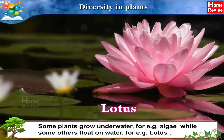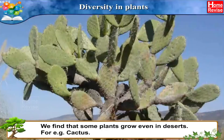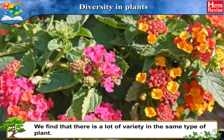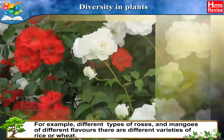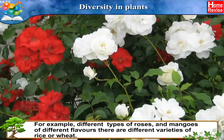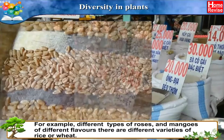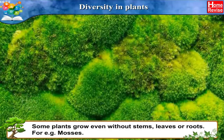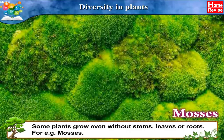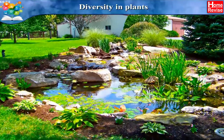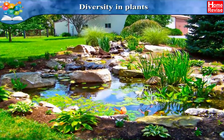Some plants grow even in deserts, for example cactus. There is also a lot of variety within the same type of plant — for example, different types of roses, and mangoes of different flavors. There are different varieties of rice or wheat too. Some plants grow even without stems, leaves, or roots, for example mosses, which are very different from ordinary plants.